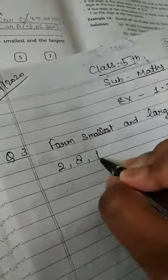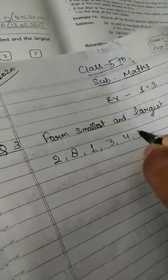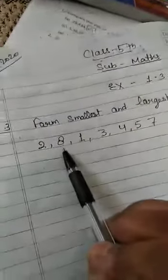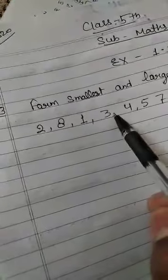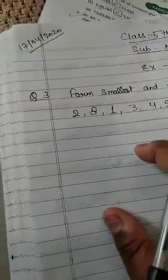2, 8, 1, 3, 4, 5 and 7. So it is 7 digits. Now, here is 2, 8, 1, 3, 4, 5, 7. These are digits. Now, when you use them, you will make a smallest number and a largest number.